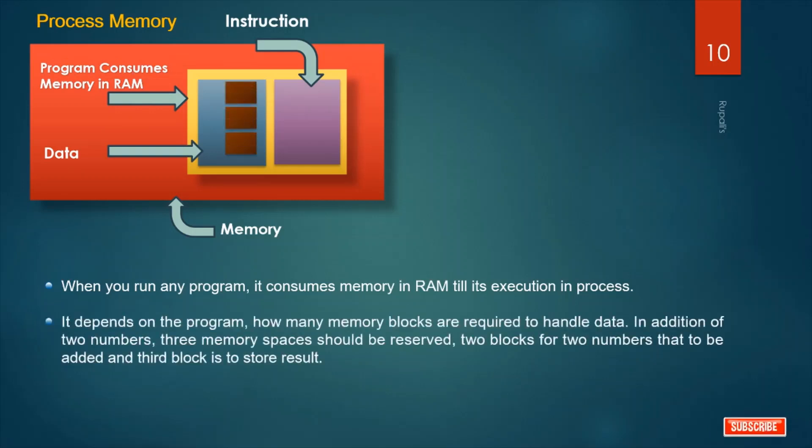It depends on the program how many memory blocks are required to handle data. In our program, three blocks are required: one for a, another for b, another for c. In addition of two numbers, three memory spaces should be reserved - two blocks for two numbers to be added and third block to store the result. These memory blocks are variables. They have names for identification.